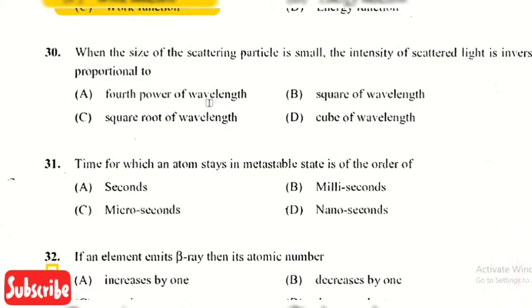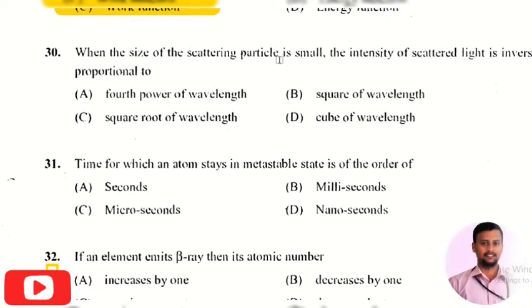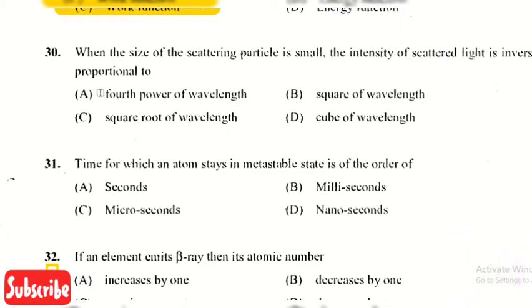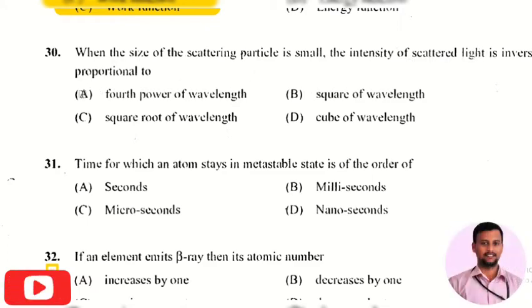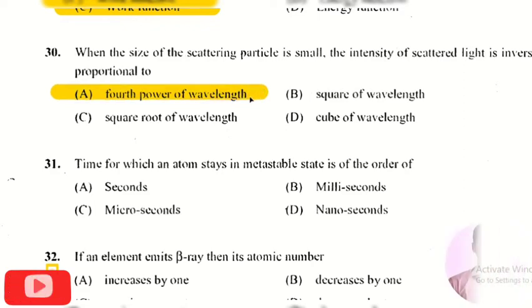The next question is: when the size of a scattering particle is small, the intensity of scattered light is inversely proportional to? The right answer is option 1, that is the fourth power of wavelength.